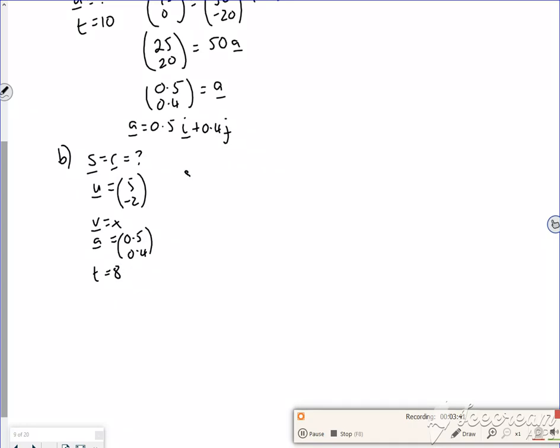So without v again, it's s, or r, is ut plus a half a t squared. It should really be r, so you can change it to an r if you want. So 5 minus 2, times by 8, plus a half of 0.5, 0.4, 8 squared. So the top line would be 5 times 8, which is 40. A half of 8 squared is 32. A half again is 16. So that's going to give me 56.